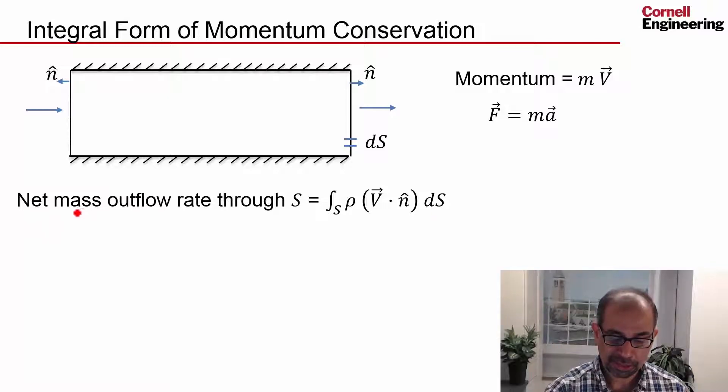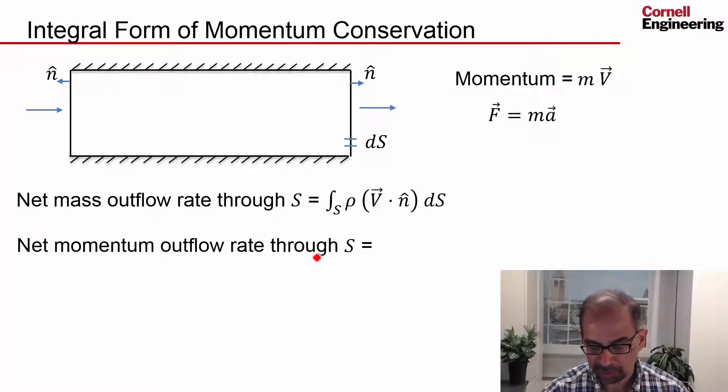Let's extend that to the net momentum outflow rate. Now I'm looking at the net momentum outflow rate through a control surface. Let's consider first an elemental surface ds.